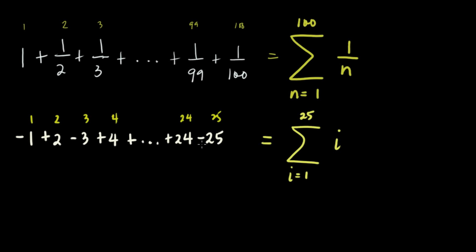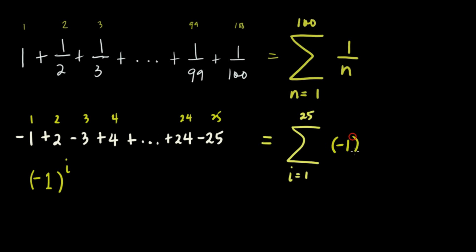So for this, I think our rule is we put negative 1 raised to a power. If you raise negative 1 to an even number, the answer is positive. If you raise it to an odd number, the answer is negative. So clearly, our summation will have negative 1 raised to I, multiplied by I.